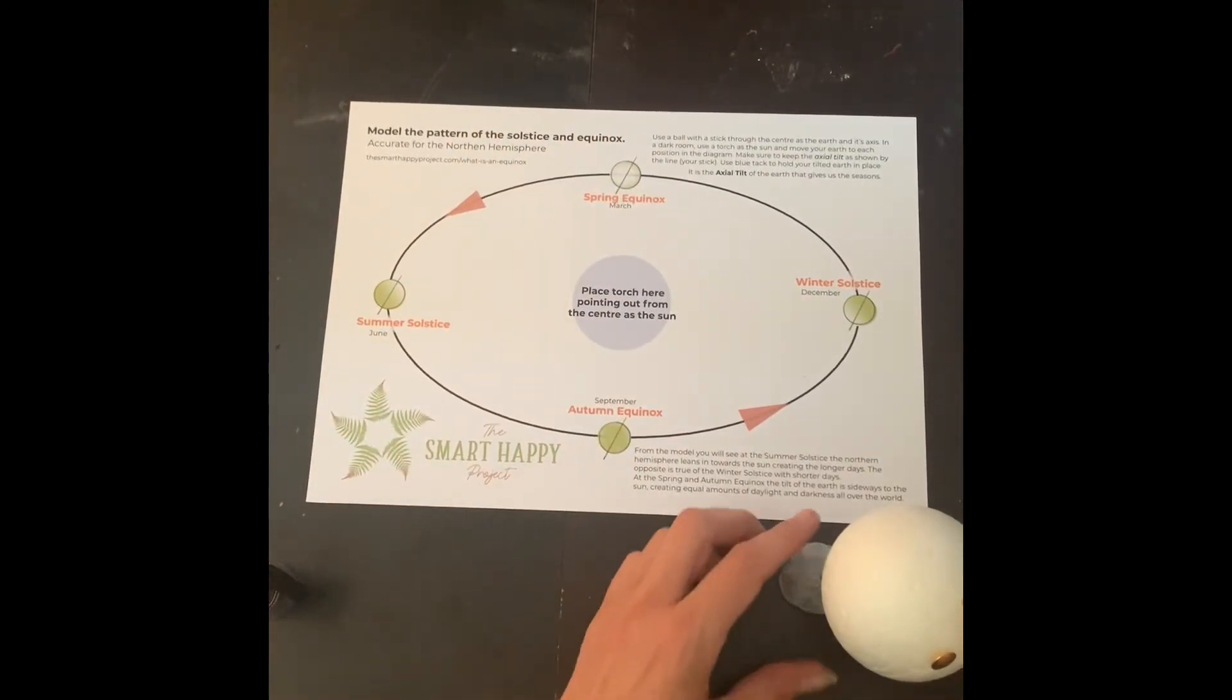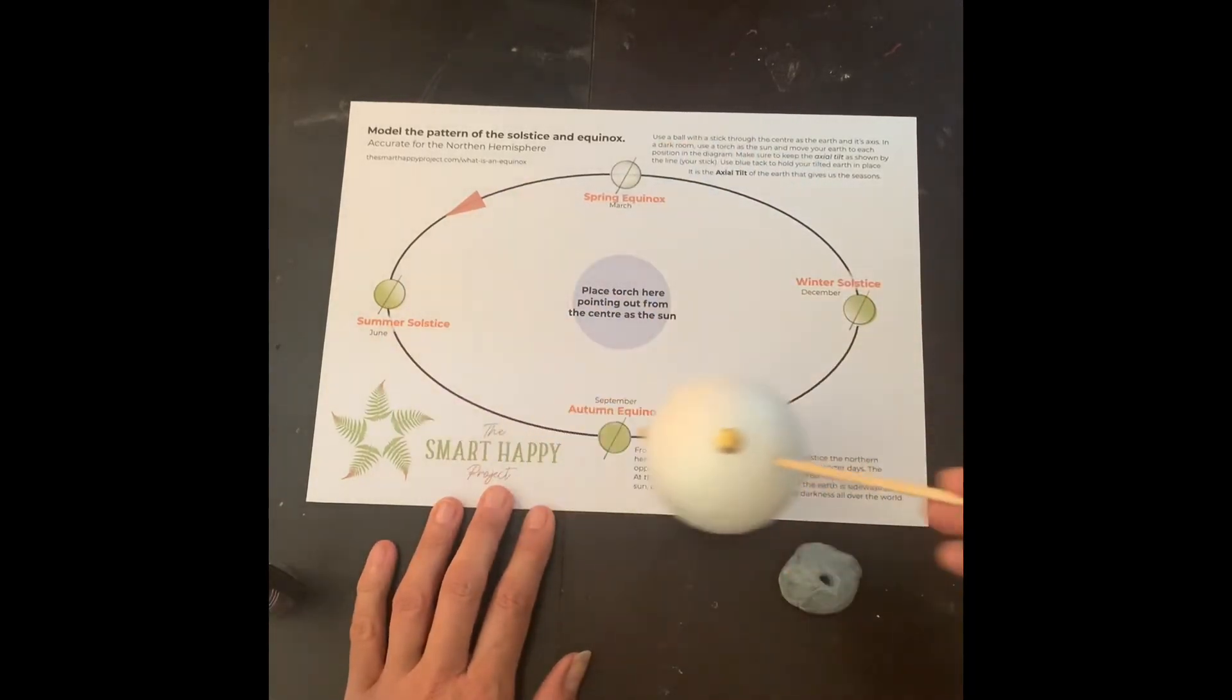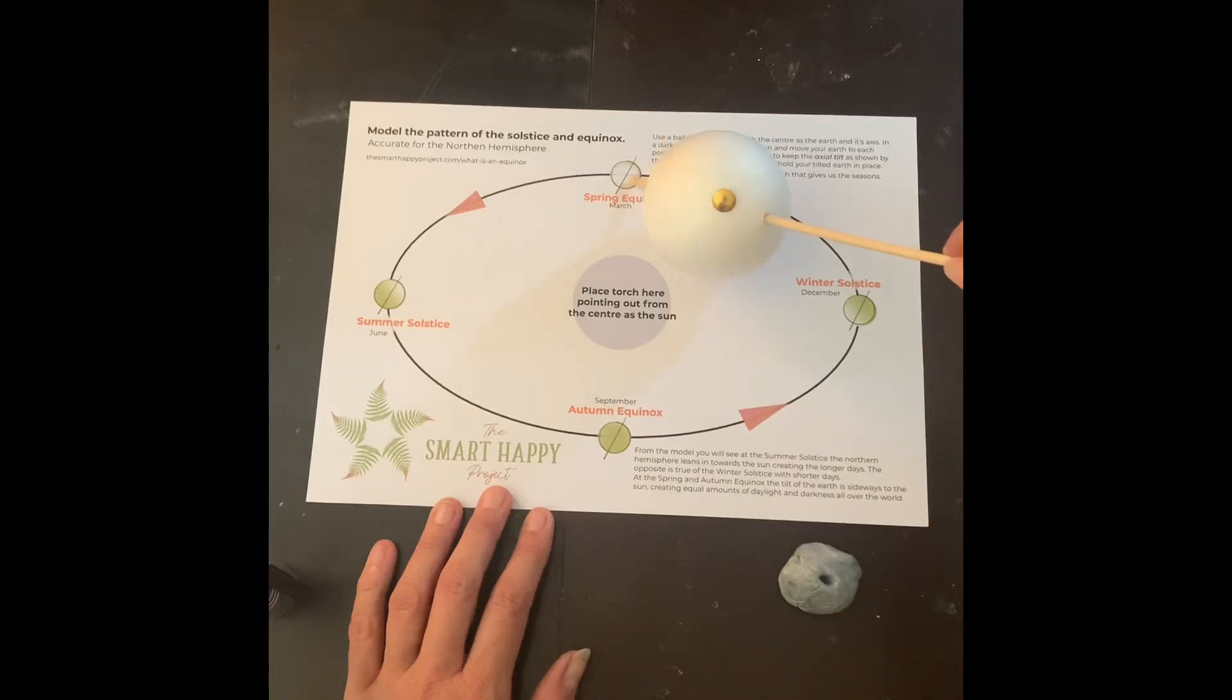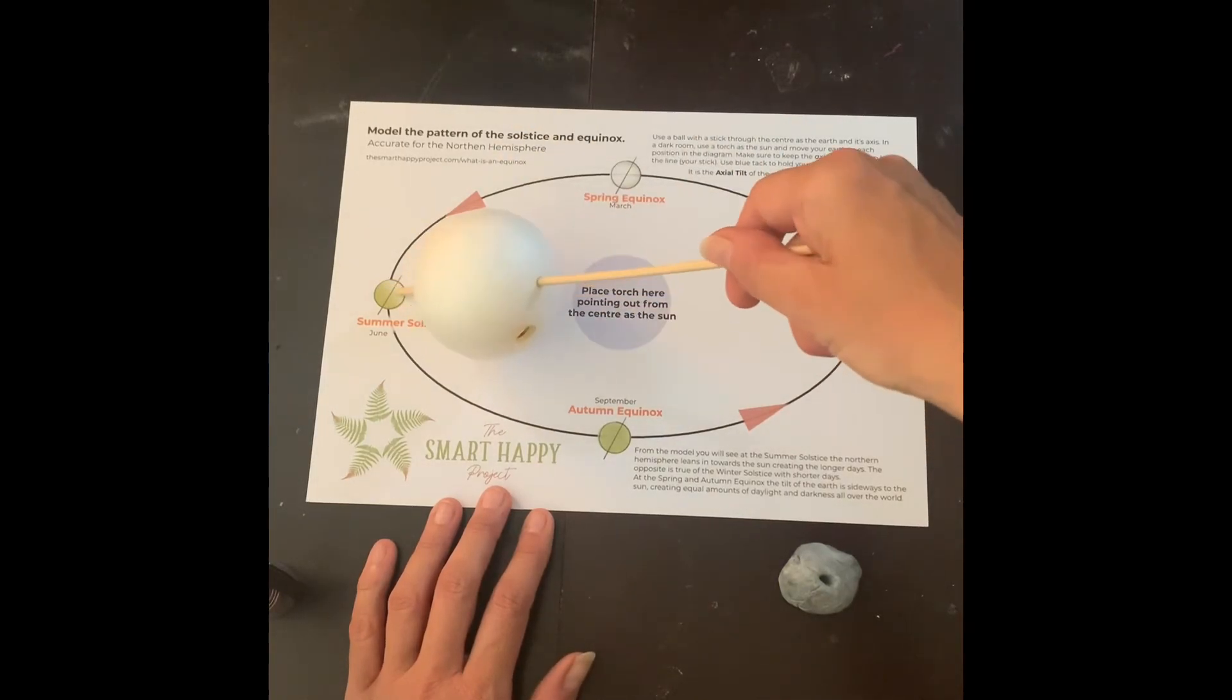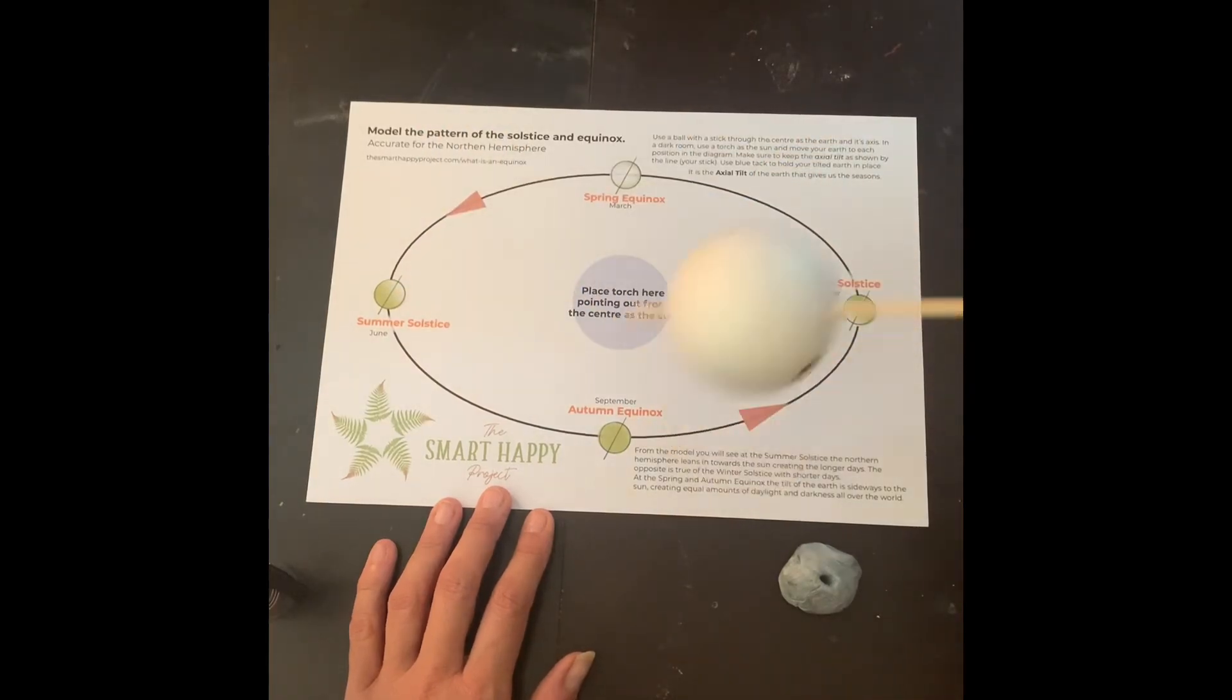So that is our journey throughout the year. So we start the spring equinox, and then the summer which is where we are next week, autumn and winter.